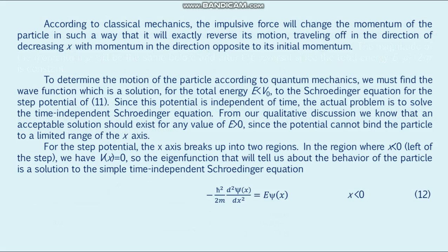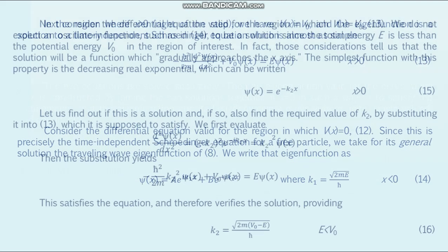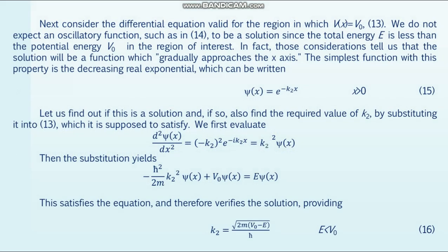For the step potential, the x-axis breaks up into two regions. In the region x < 0 (left of the step), V(x) = 0, so the eigenfunction satisfies the simple time-independent Schrödinger equation given by formula number 12. In the region x > 0 (right of the step), V(x) = V₀, and the eigenfunction satisfies the time-independent Schrödinger equation given by formula 13.